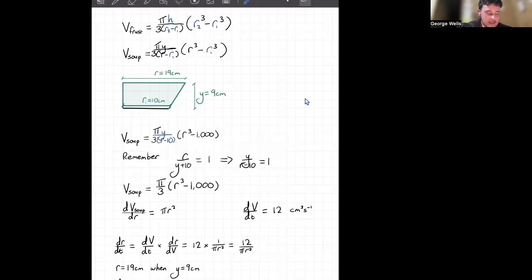So dv dt, as we just said, is 12 centimeters. And our dr over dv, we'll just flip that. So put it over 1. And we end up with 12 over pi r squared. Now remember,